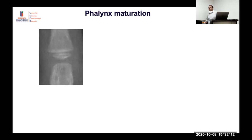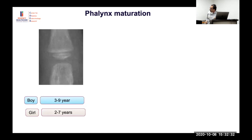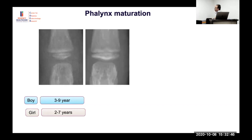The key structure to compare is the epiphysis versus the metaphysis, with the physis (growth plate) between them. When the epiphysis is much smaller than the metaphysis, this corresponds to approximately four to eight years of age. As the child progresses, the epiphysis grows to equal the metaphysis.